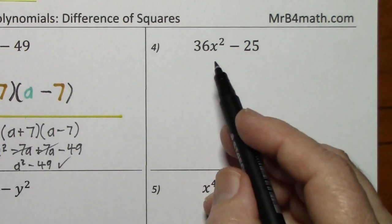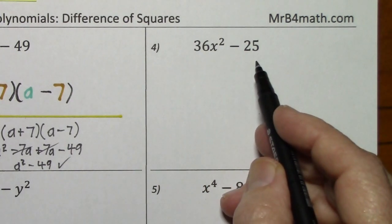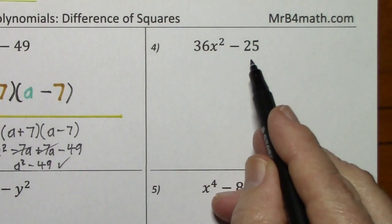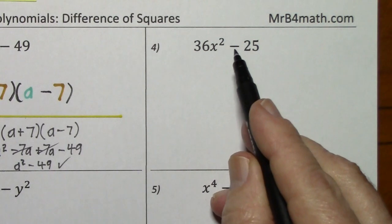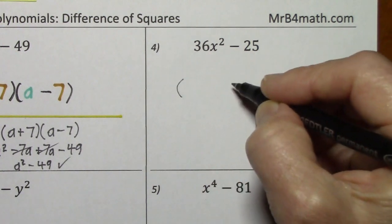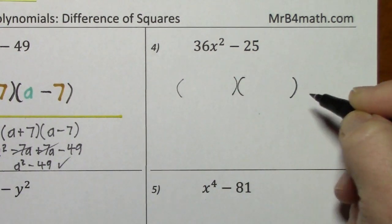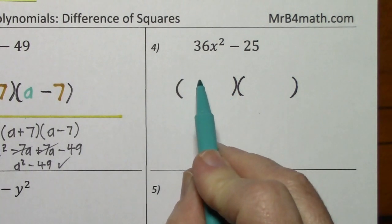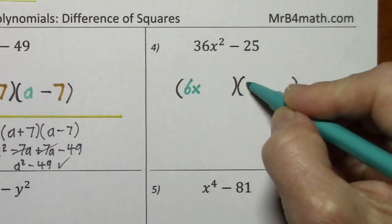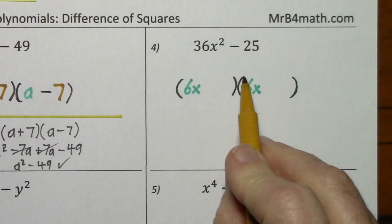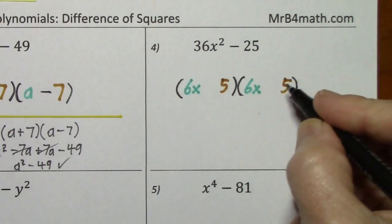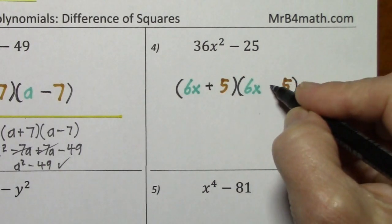Looking at number 4: number one on the list, GCF — none other than 1. Number two on the list: do you have two terms? Yes. Do you have a difference of perfect squares? Yes. So you can factor this without really writing anything except the answer. The square root of 36x squared is 6x, and the square root of 25 is simply 5. You have one plus and one minus.